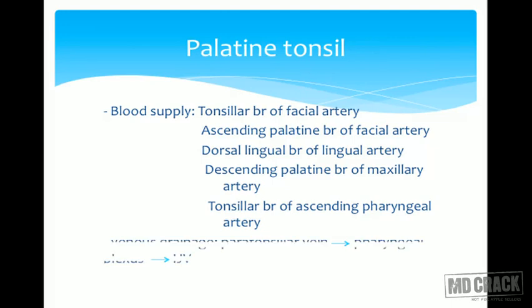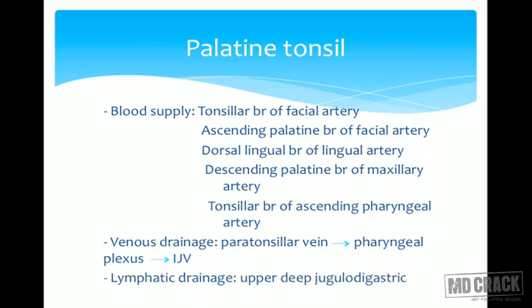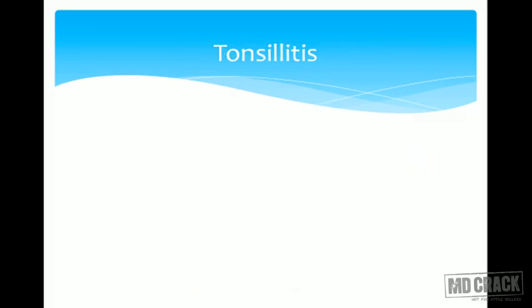Venous drainage is from the paratonsillar vein into the pharyngeal plexus and ultimately into the internal jugular vein. Lymphatic drainage of the tonsil is into the upper deep jugulodigastric nodes.